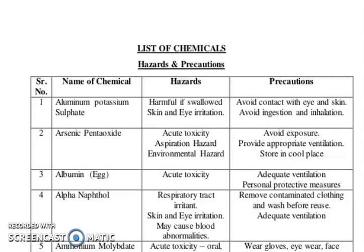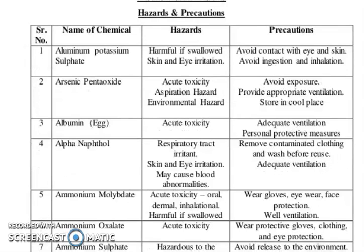Arsenic pentoxide. Hazards: acute toxicity, aspiration hazards, environmental hazards. Precautions: avoid exposure, provide appropriate ventilation, store in a cool place. Albumin: acute toxicity. Precautions: adequate ventilation, personal protective measures (PPM).